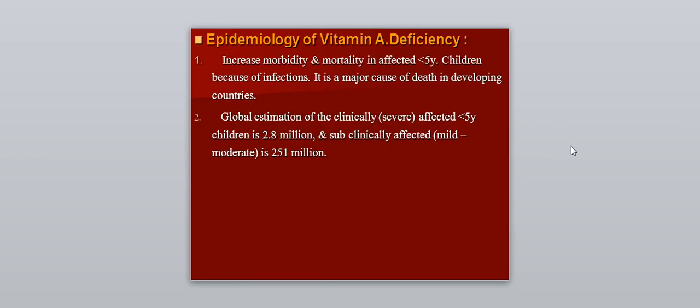Regarding the epidemiology of vitamin A deficiency: there is increased morbidity and mortality in affected children under five years of age, mostly because of infection — the major cause of death in developing countries, especially in those with protein energy malnutrition. The global estimate of clinically severely affected patients under five years is 2.8 million, and those with subclinical mild-to-moderate deficiency number 251 million patients.